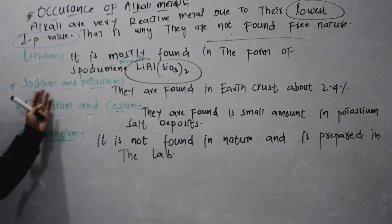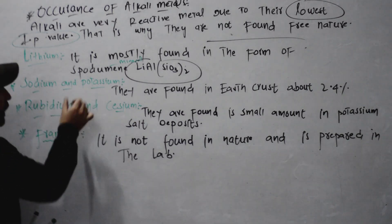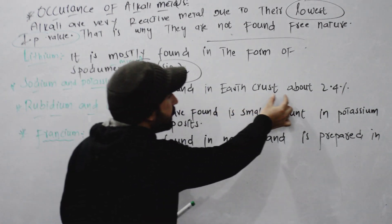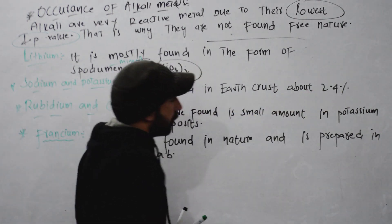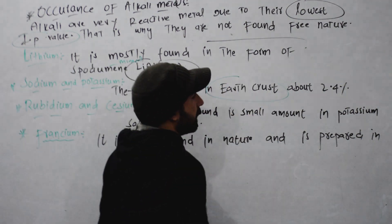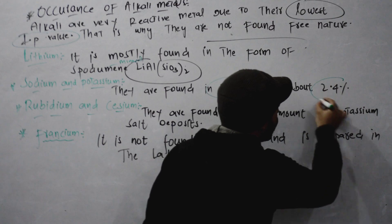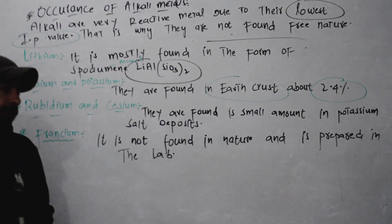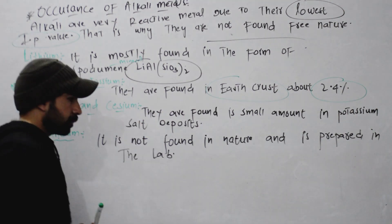Sodium and potassium - their presence in the earth's crust is about 2.4 percent. So, in the earth's crust, they are about 2.4 percent.